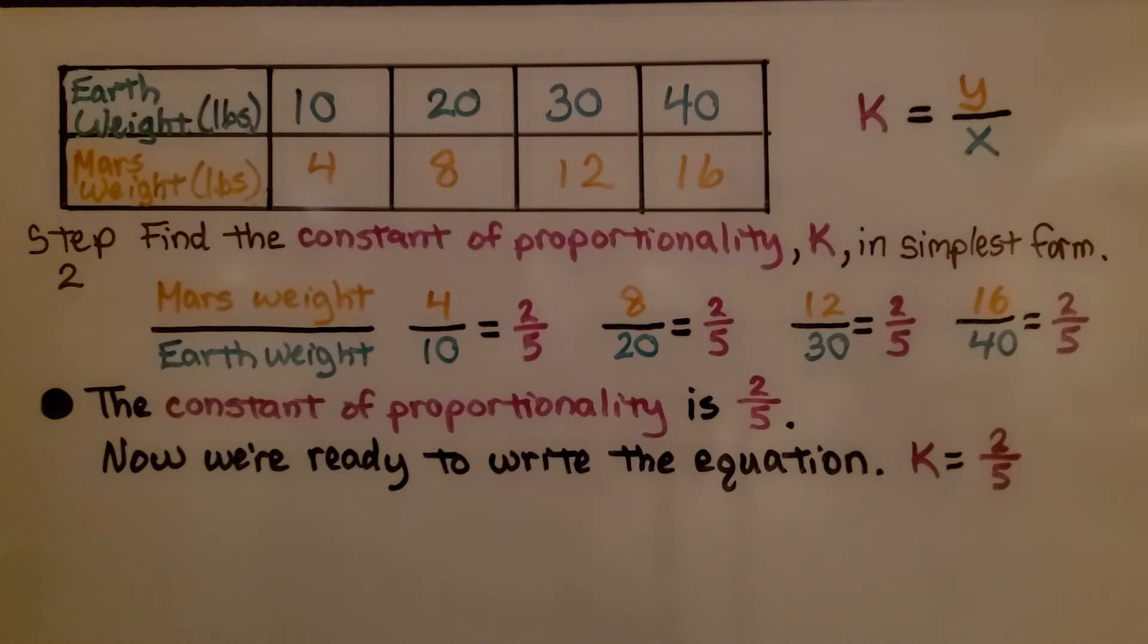Step 2, we find the constant of proportionality, k, in simplest form. We write the Mars weight over the Earth weight. Notice how I flipped these around. I swapped them, now the orange Mars weight is on top.